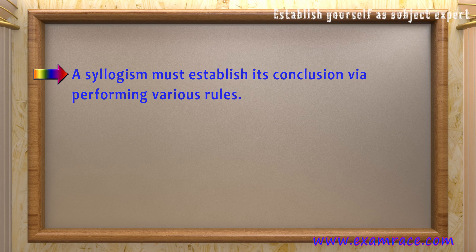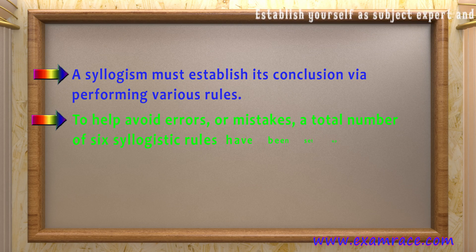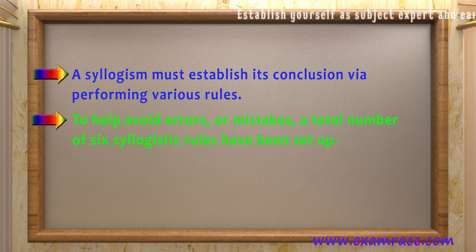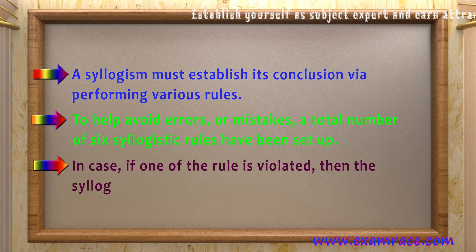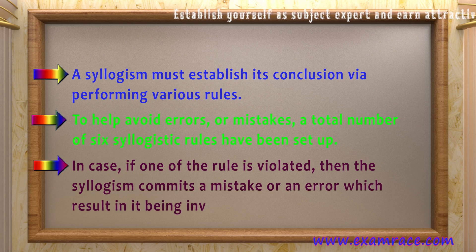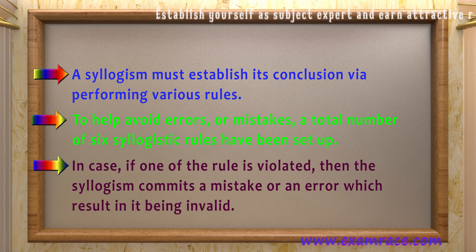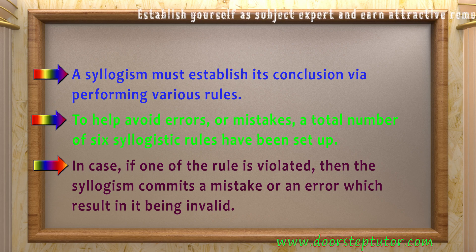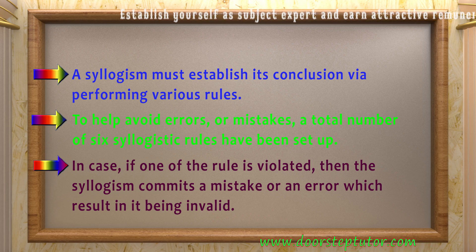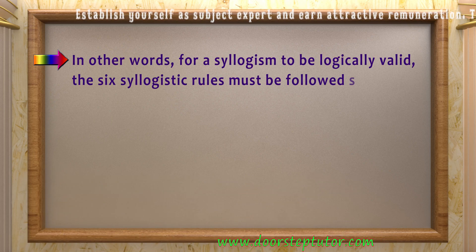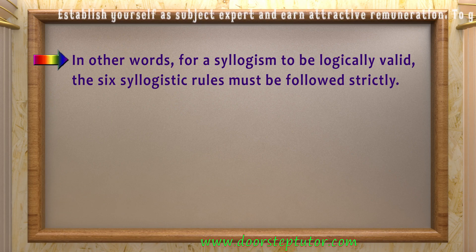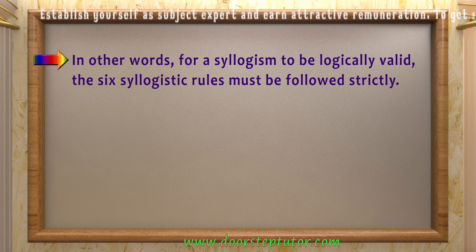A syllogism must establish its conclusion by performing various rules. To help avoid errors or mistakes, a total number of six syllogistic rules have been set up. If one of the rules is violated, then the syllogism commits an error and is regarded as invalid. In other words, for a syllogism to be logically valid, the six syllogistic rules must be strictly followed.